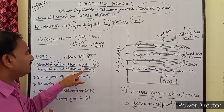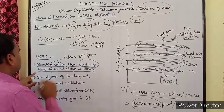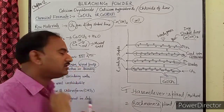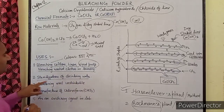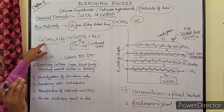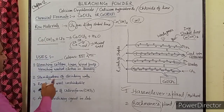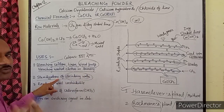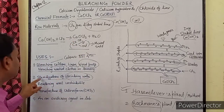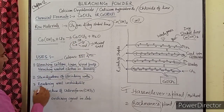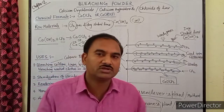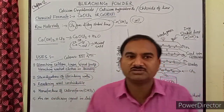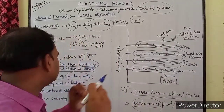Bleaching washed cloth in laundry — कपड़े धोने की जो laundry होती है उसमें धुले हुए कपड़े का color उड़ाने के लिए उपयोग होता है, फिर उसमें मनचाहा color डाल देते हैं। Next is sterilization of drinking water — bleaching powder में germicidal property होती है, germs को मारने की property। इसलिए पीने के पानी में bleaching powder डाला जाता है। इसका उपयोग rendering wool unshrinkable के लिए भी होता है — bleaching powder से treat करने पर wool सिकुड़ता नहीं है।